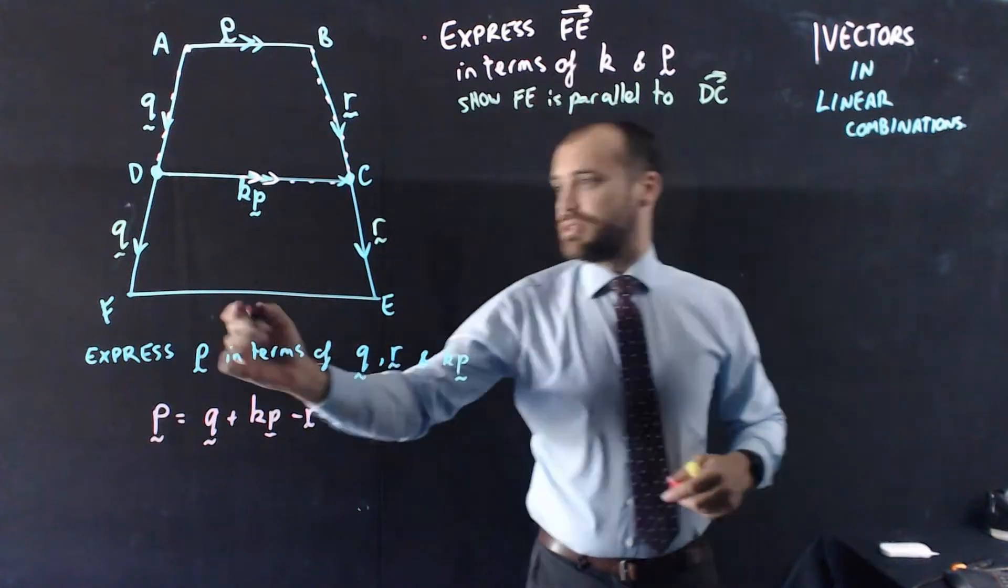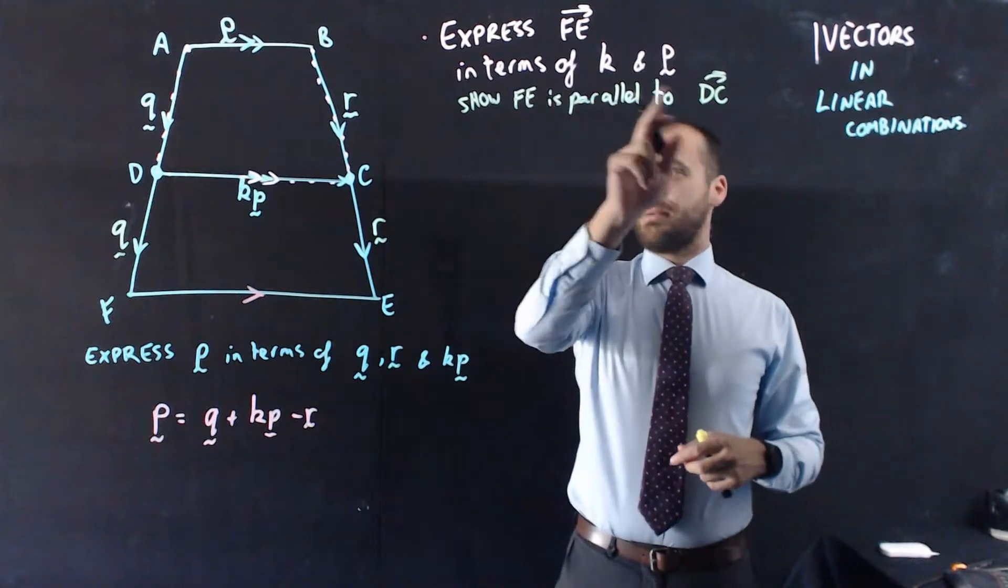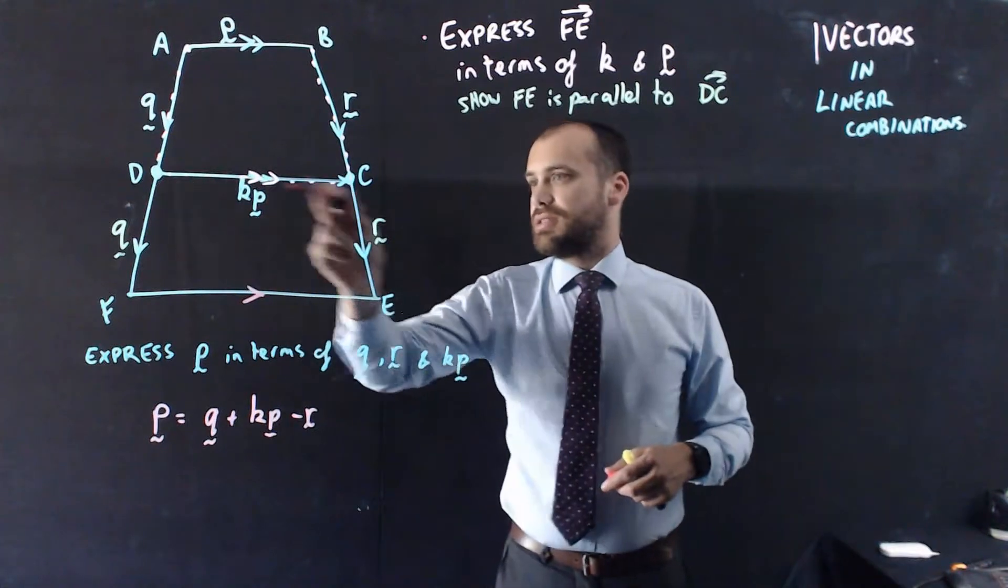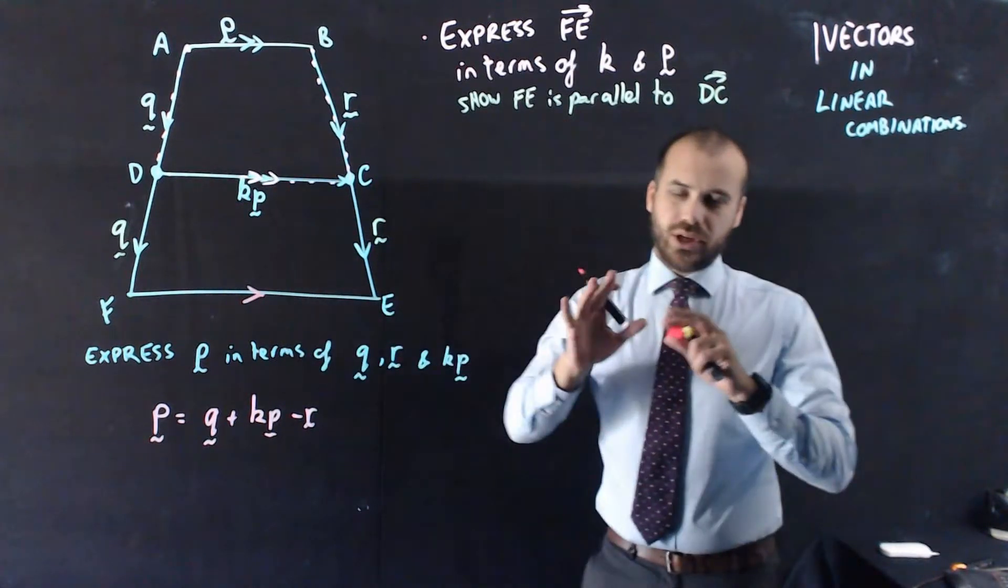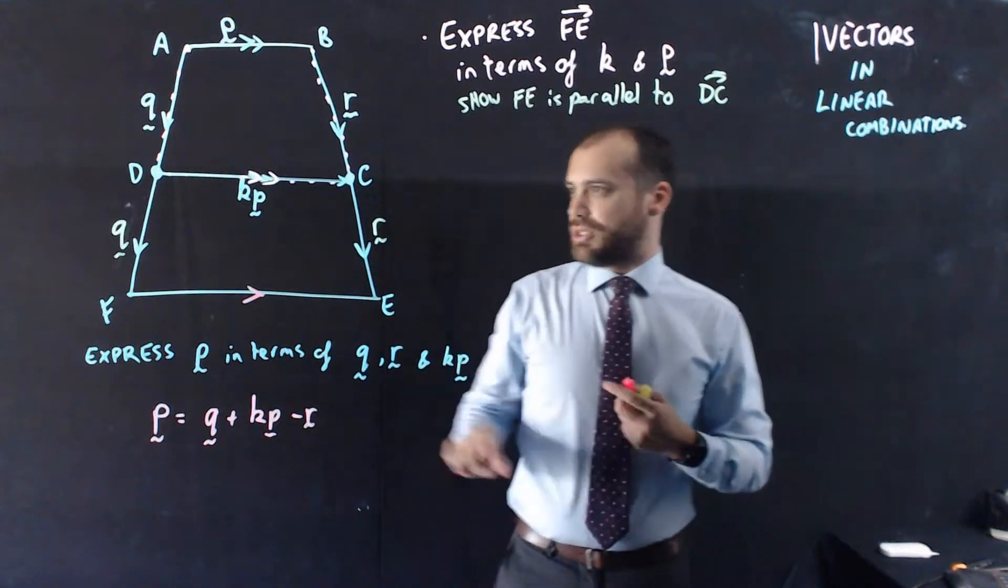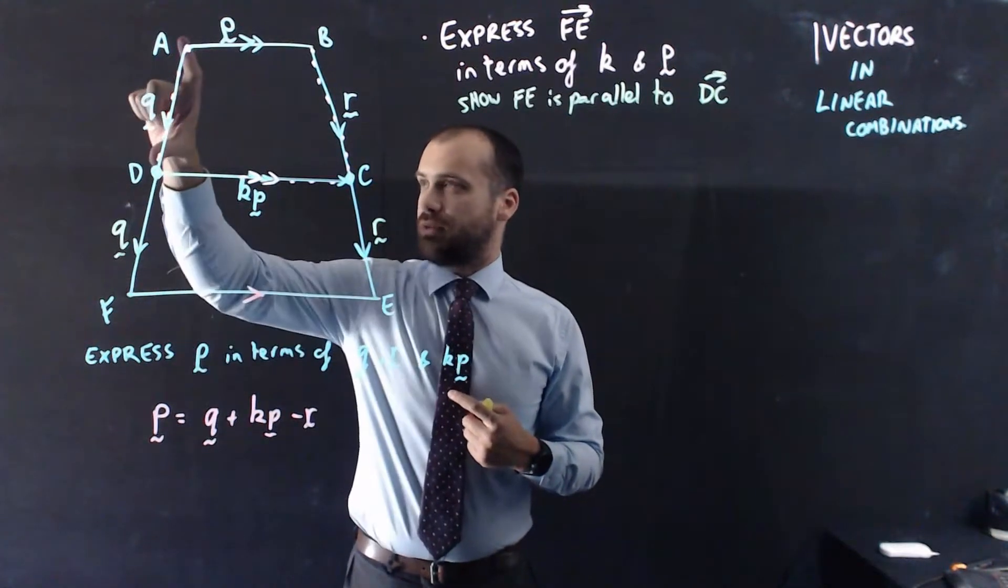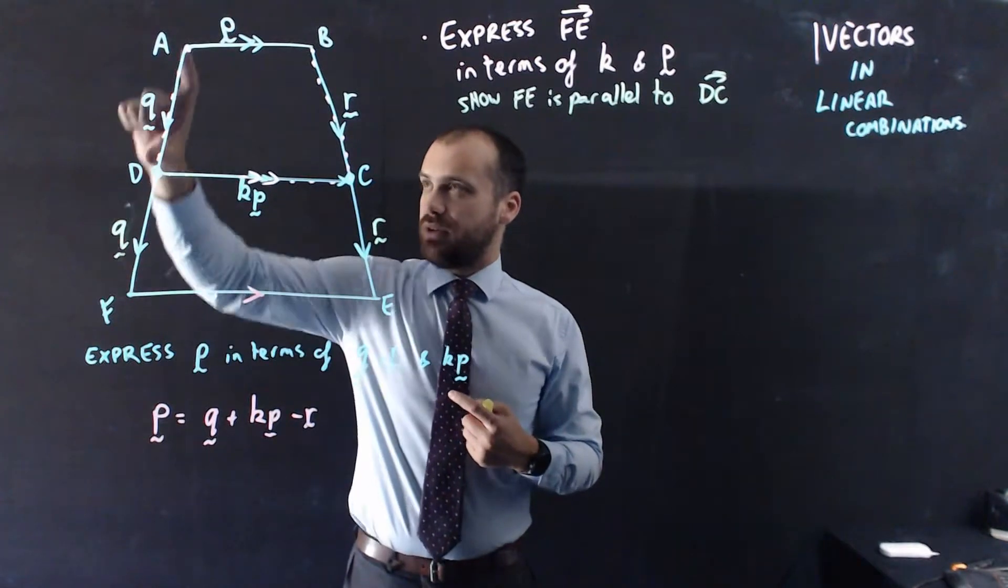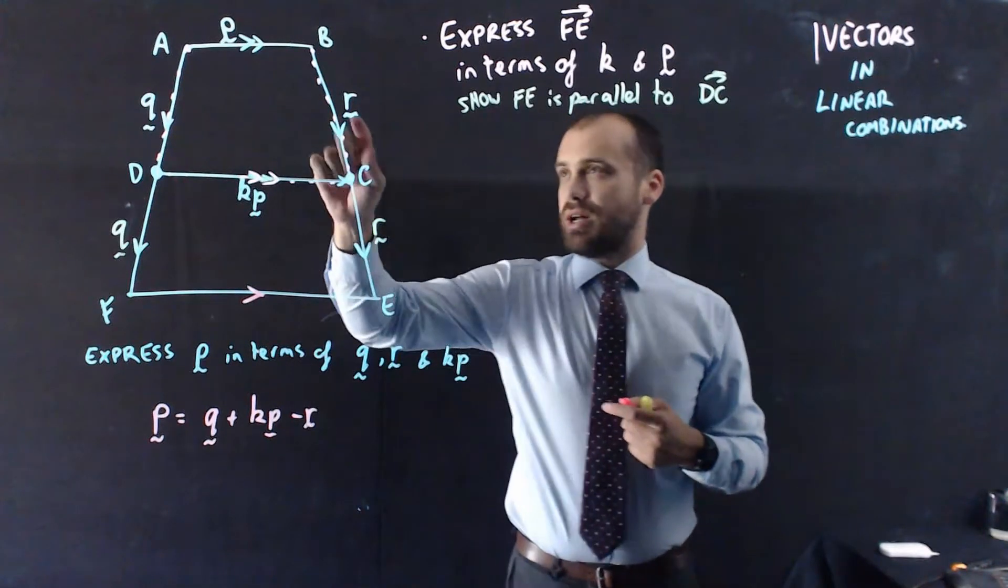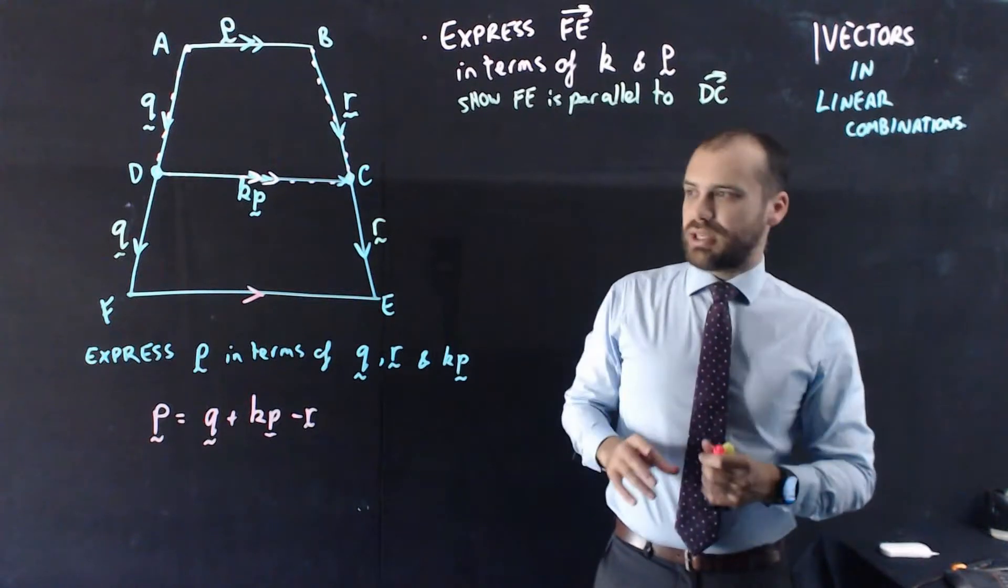Express FE, so this vector here, express FE in terms of K and P. Show that FE is parallel to DC, that's DC there. So we need to show that this is parallel to this. We don't know that yet, it seems pretty obvious, but we don't know it. Alright, I've added in just a little more information here. I'm going to tell you that this from D to F is the vector Q. So what I'm saying is AD and DF are equal distance and parallel. And I'm also going to say that BC is R, but so is CE, that's also R. Added in that information, now we can get started.